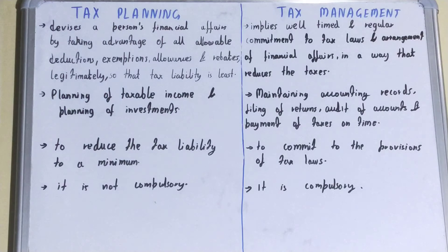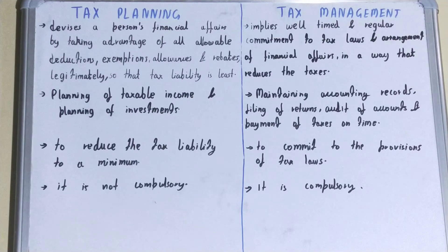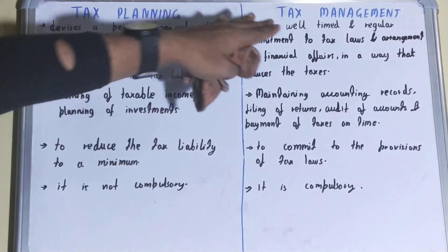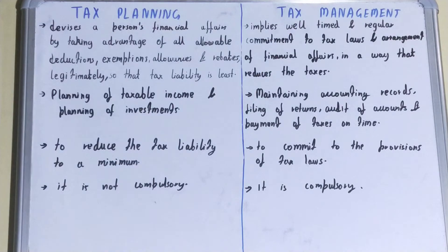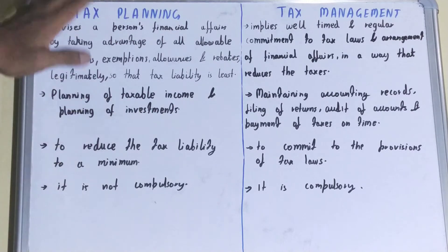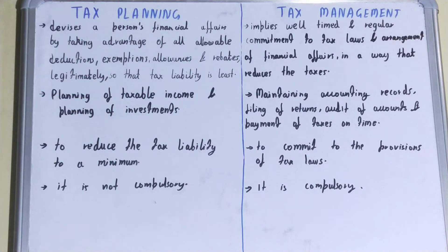In the case of tax management, what we do is we try to manage our taxes in the best possible way, as well as we try to pay the taxes on time. It's like following all the tax rules established by the government, whereas in tax planning we use tax policies to reduce tax liabilities.